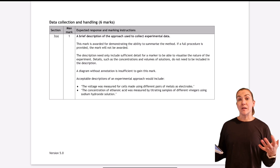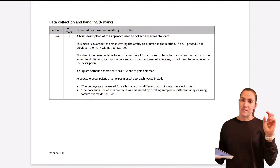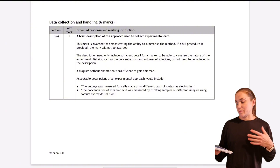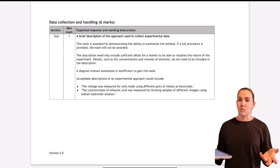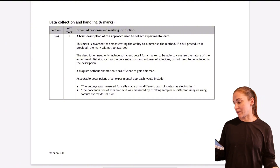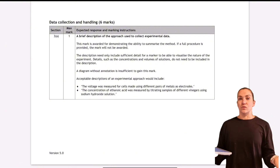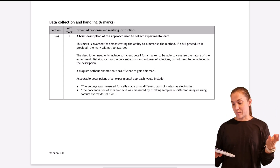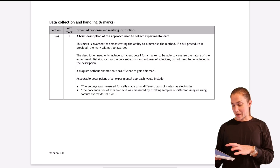For your method, brief is the key word — it's just a very brief description of your experimental approach. You ideally want a diagram with a couple of sentences at most. The whole point is that someone can visualise what you did; they don't need a detailed step-by-step instruction. For example, 'the voltage of cells was measured for different pairs of metals used as electrodes' — that's basic but you can visualise it. If you include a diagram, you must have some sentences as well, as a diagram without annotation is insufficient. Keep it to a diagram and one or two sentences max.